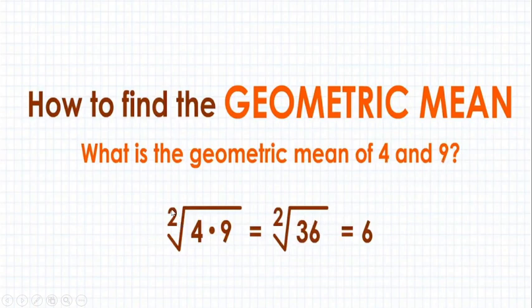In place of n, you are writing 2 here. Root of, it is 4 and 9. So 4 into 9, you will get 36. 2 root of 36 is 6.